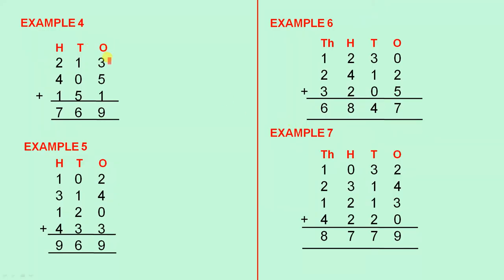Example four. 213 plus 405 plus 151. Add the numbers in the ones column to give you 9, add the numbers in the tens column to give you 6, and you add the numbers in the hundreds column to give you 7. The answer is 769.